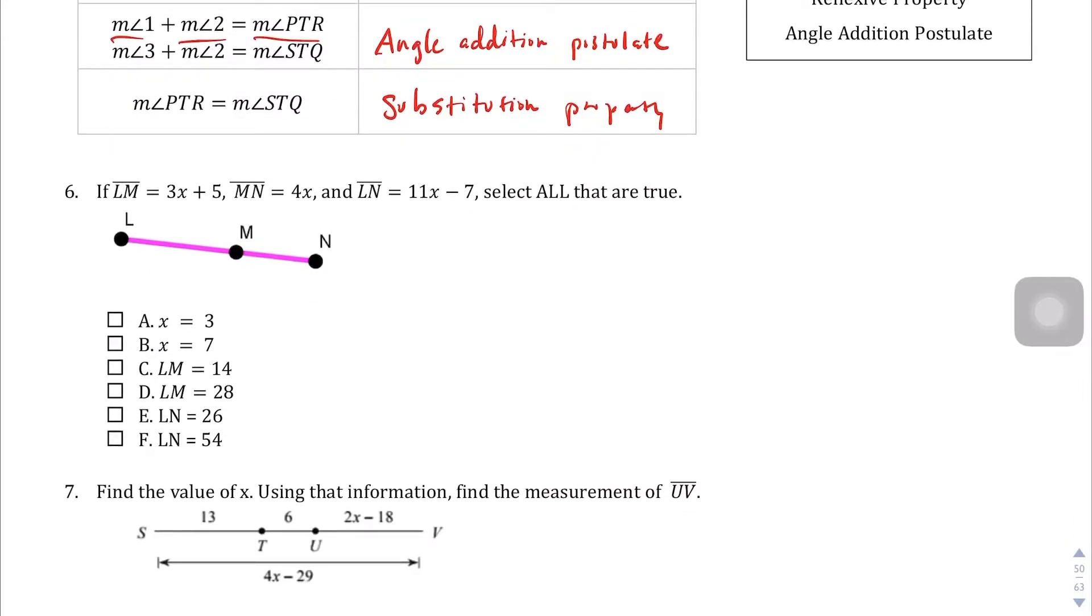Question number 6, we have a segment LM, which equals 3X plus 5, MN equals 4X, and then the entire thing equals 11X minus 7. Select all that are true. Well, it looks like we're going to have to solve this before we can actually choose what is true, so let's do 3X plus 5 plus 4X is going to equal 11X minus 7.